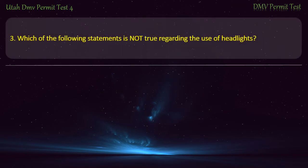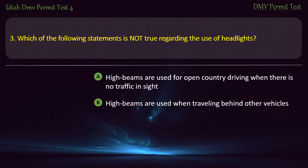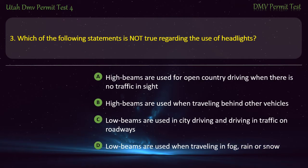Question 3. Which of the following statements is not true regarding the use of headlights? High beams are used for open country driving when there is no traffic in sight; High beams are used when traveling behind other vehicles; Low beams are used in city driving and driving in traffic on roadways; Low beams are used when traveling in fog, rain or snow? Answer: High beams are used when traveling behind other vehicles.